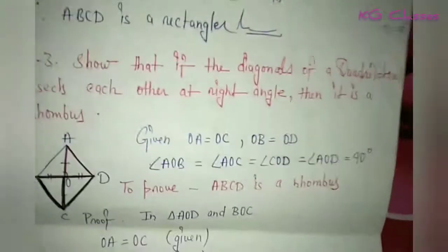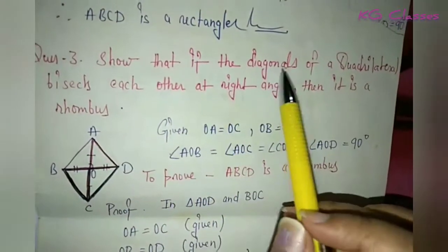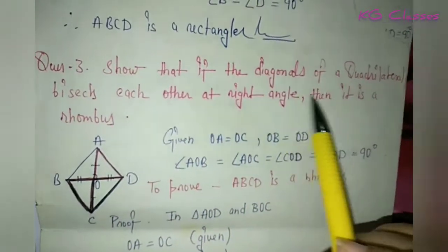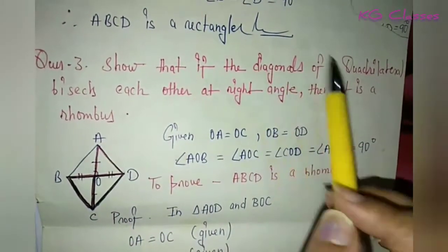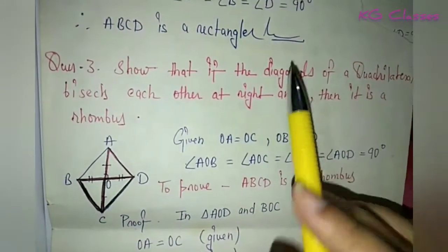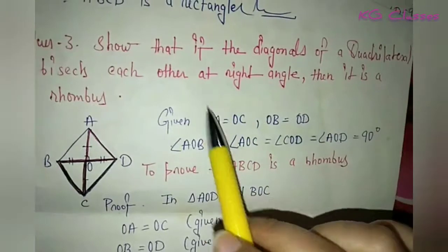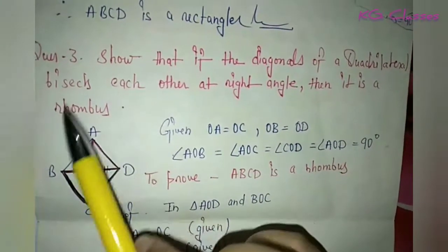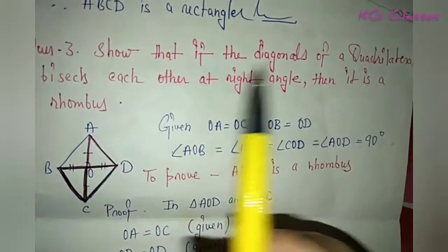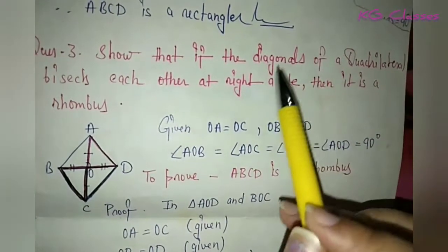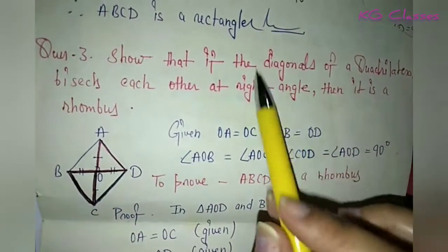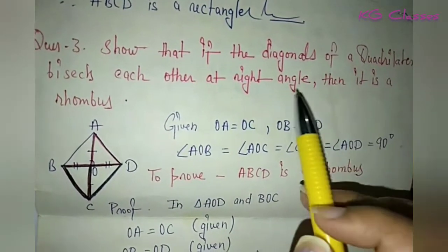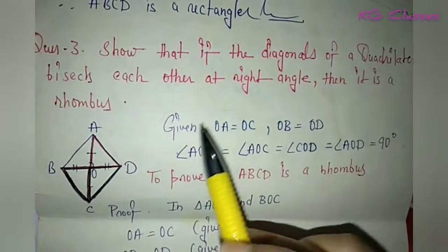So here we have our first problem. Show that if the diagonals of a quadrilateral bisect each other at right angles, then it is a rhombus. So we have to prove that if the diagonals of a quadrilateral bisect each other at right angles, then it is a rhombus.